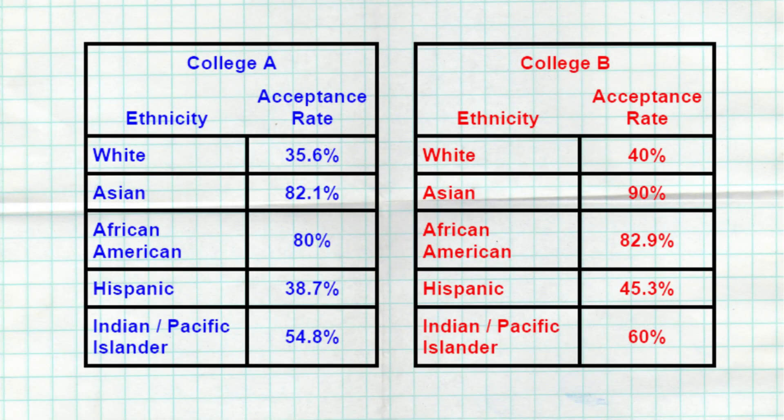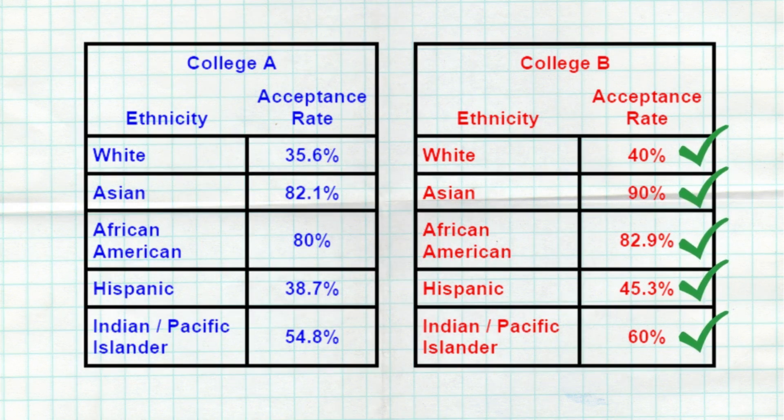What's up, my stat stars? Let's take a look at the college acceptance rates at two different colleges. To protect the innocent, we'll call them College A and College B. What we're looking at here is the accepted rates based on ethnicity. Broken down by ethnicity, College B has a higher acceptance rate for every single ethnicity when you compare it to College A — whether it's white, Asian, African American, Hispanic, or Indian Pacific Islander. College B seems to be better, with a much higher acceptance rate.